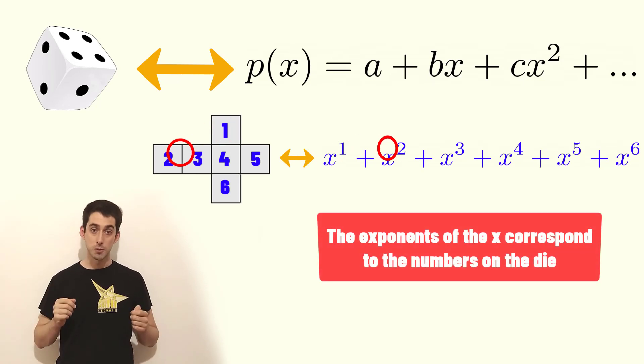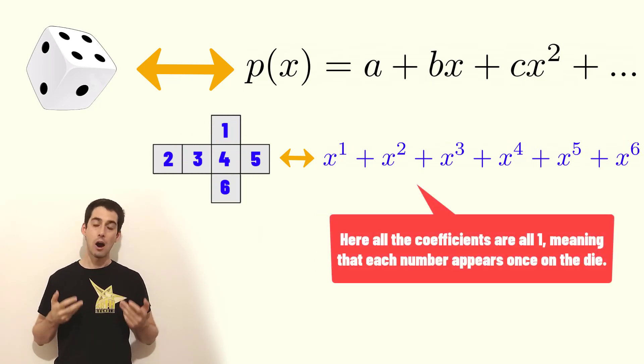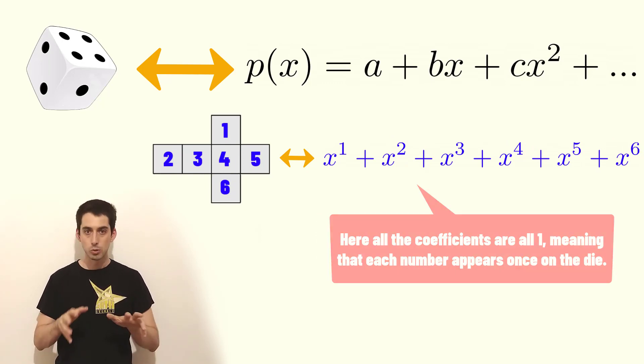The exponents correspond to the numbers on the die while the coefficients count how many times does a specific face appear. So let's do another example.